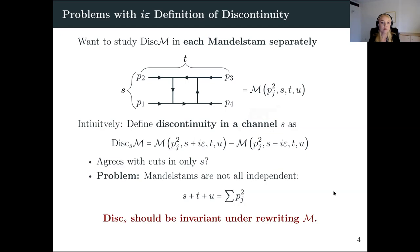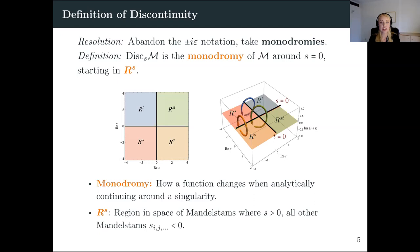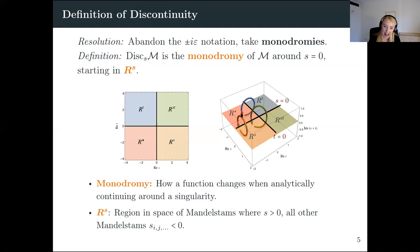The resolution to both of these problems is to abandon the I-epsilons and take monodromies instead. We define the discontinuity in S as the monodromy of the amplitude around the point S equals zero, starting in the region R_S. R_S is the region in the space of complex Mandelstam variables where S is greater than zero, but all other Mandelstam variables are less than zero. The monodromy is the difference between the function computed in R_S and the amplitude analytically continued around the singularity at S equals zero back to R_S.